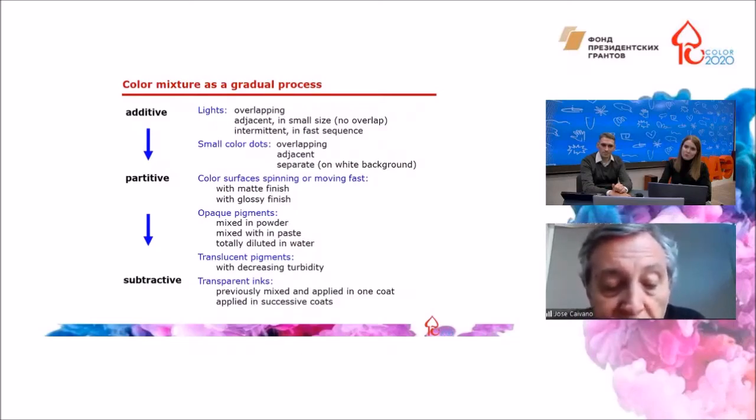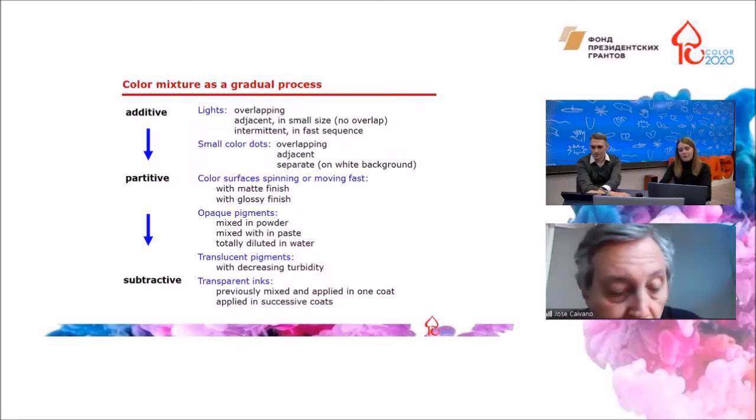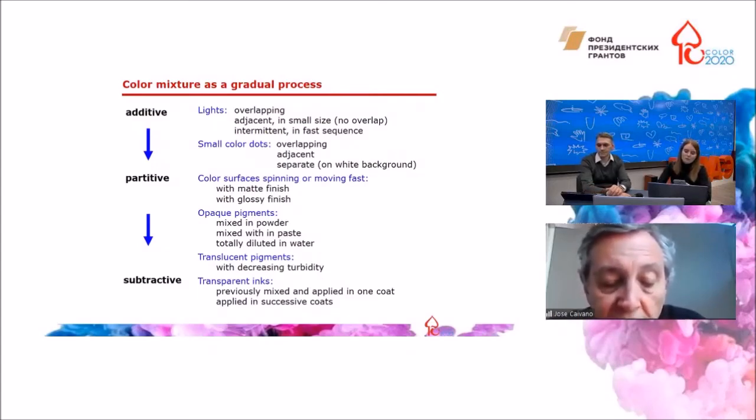Opaque pigments mixed in powder or in paste by graduating the amount of water or totally diluted in water, translucent pigments with decreasing turbidity from near opaque to near transparent, transparent inks previously mixed and applied in one coat or applied in successive coats after the previous is dry. It is necessary to verify these things experimentally considering that the degree of transparency, translucency, or opacity of the material as well as the degree of gloss or matte finish of the surfaces will have a great influence on the processes and the results.